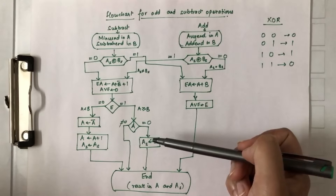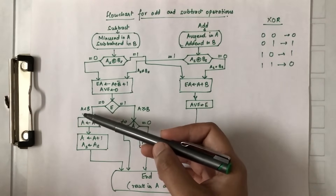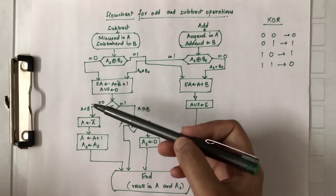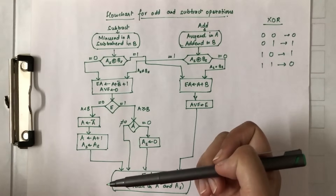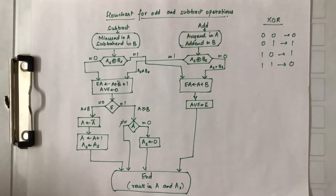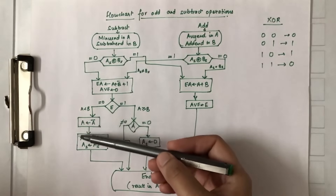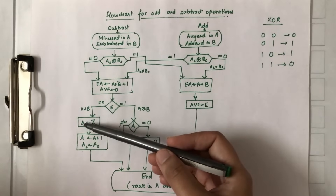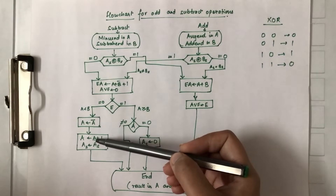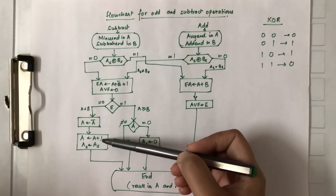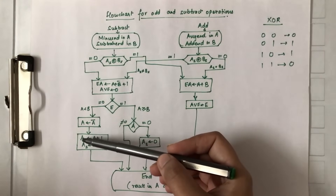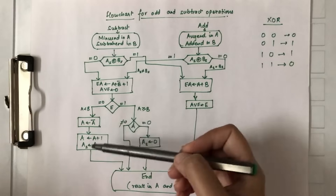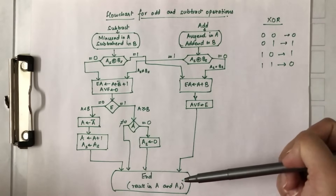In the other case where A is smaller than B, we need to perform a little operation: we need to find the two's complement of A, because B minus A has to be done. We first find the complement and store it in A, then add one to it and store it in A again. This is how we find the two's complement, and the result is again stored in A and As.